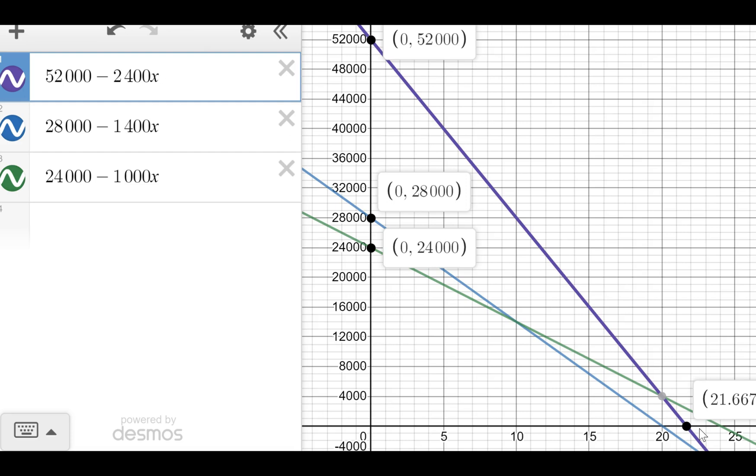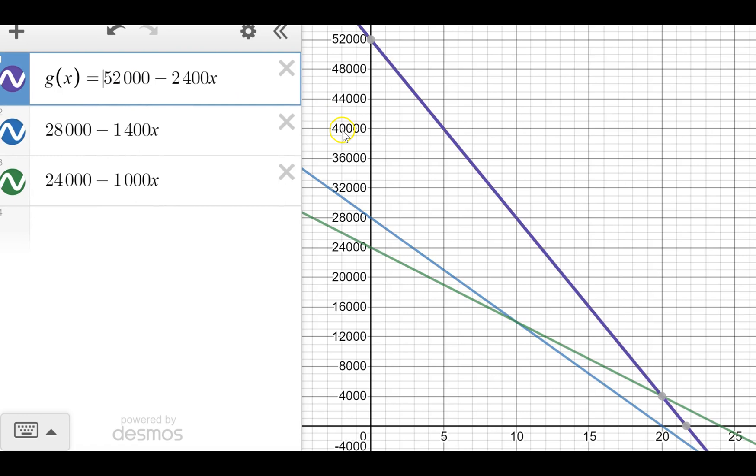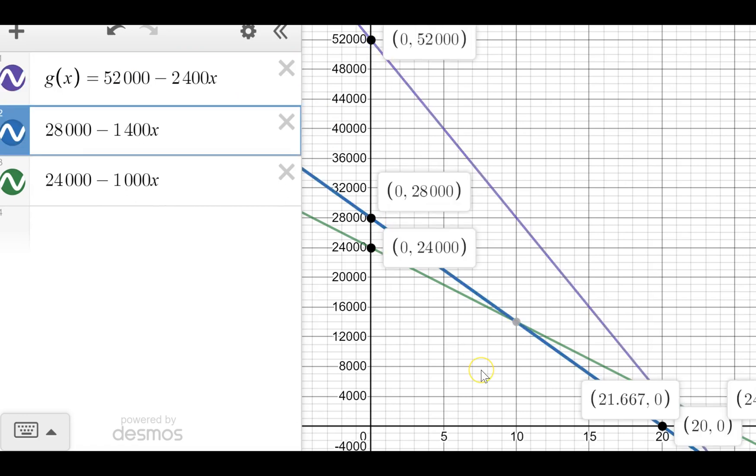We have this graph here that represents G(x) in purple. Notice that while the two y-intercepts of Ally and Dane's functions A(x) and D(x) add up to equal the y-intercept of G(x), the x-intercepts don't add up to equal the new x-intercept of 21.667.